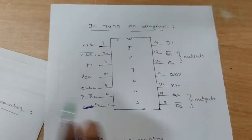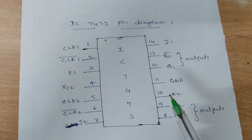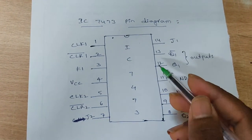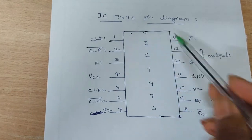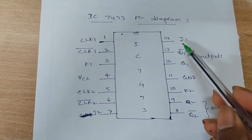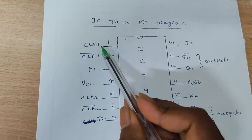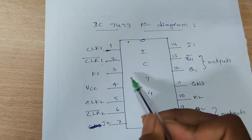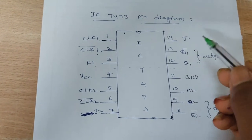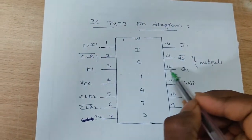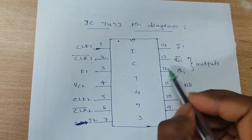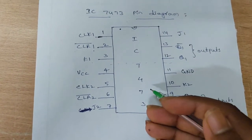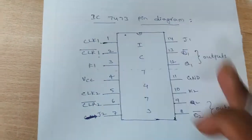This is the pin diagram of IC7473, which is a JK flip-flop. It has a total of 14 pins. Clock 1 input and clear 2, K1 — up to this is JK flip-flop 1. The top portion is JK flip-flop 1 and the bottom is JK flip-flop 2. This IC contains 2 JK flip-flops.